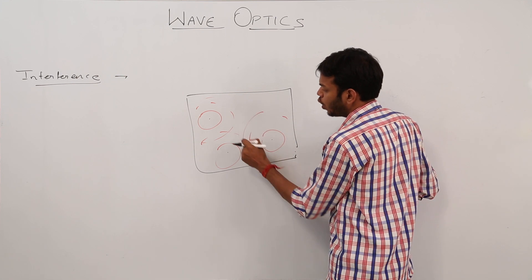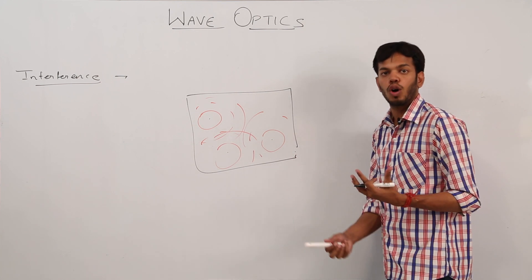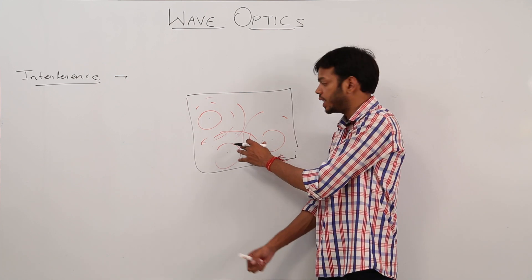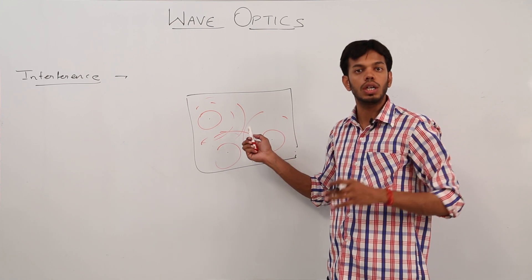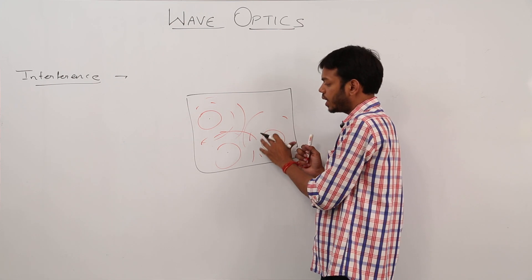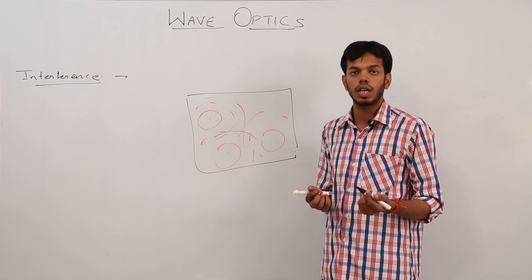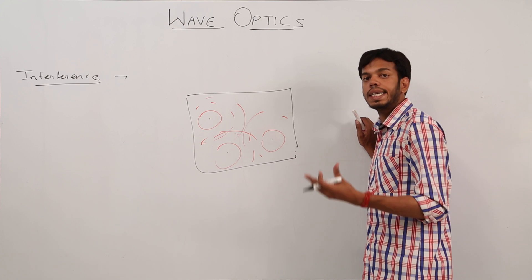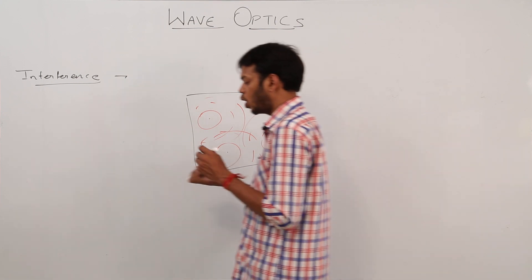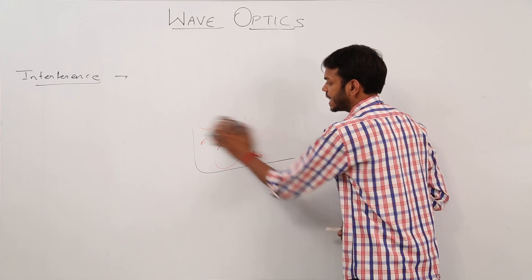What exactly is going to happen when all these crests meet? We cannot predict, because due to one transfer of energy the water particle at that point wants to go upward — that is a crest — but due to another transfer it might go downward towards the trough. Whatever the net resultant energy is, that is what happens at that point. This whole thing is called interference.